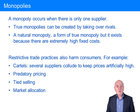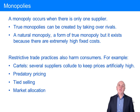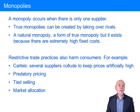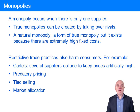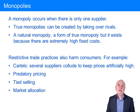Types of monopolies — you can have true monopolies. For example, if you take over all your rivals and you end up being the only supplier, or maybe you have a patent and no one else can make this valuable product that you can make, you have a true monopoly.